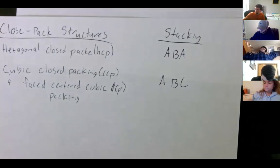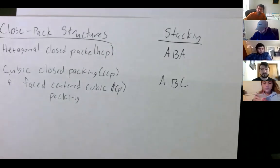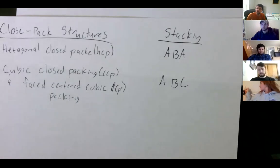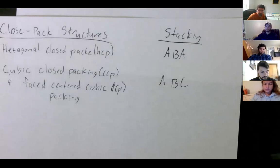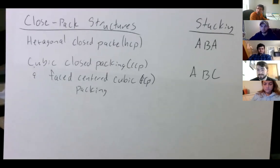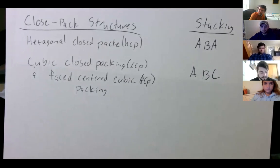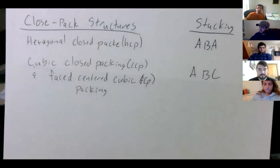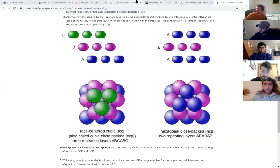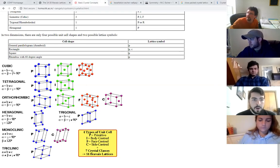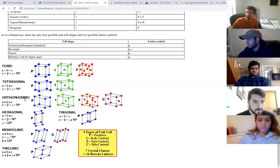For closed-packed structures, there are two main types: hexagonal close-packed (HCP) and cubic close-packed (CCP), also called face-centered cubic (FCC). HCP has an ABA stacking pattern — just a repeat of that symmetry — whereas cubic close-packing has an ABC stacking pattern. These tend to be the lowest energy arrangements for many solids like copper, silver, and gold.